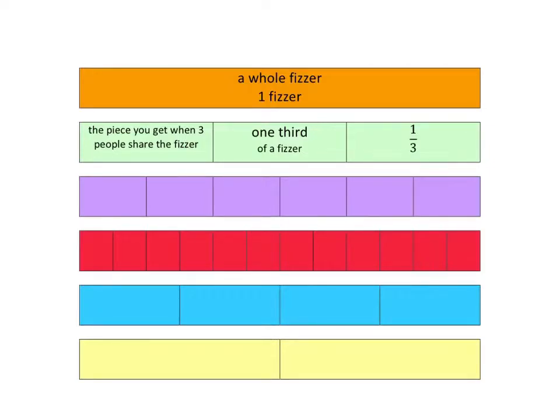We write that name like this: one-third. In that name one-third there is information for us. It tells us that we've cut that fizzer into three pieces and the person is getting just one of those three pieces. So one-third is the name we give to this piece.